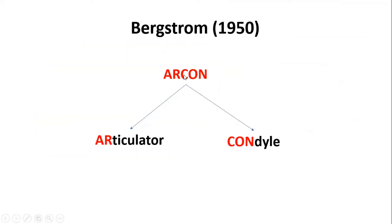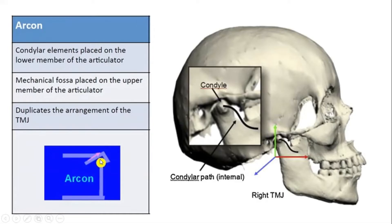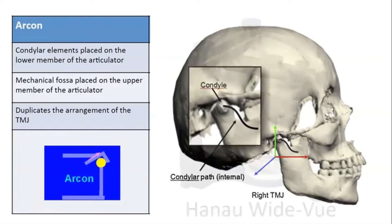The term 'arcon' was given by Bergstrom in 1915. It is made up of two terms: 'articulator' and 'condyle.' In an arcon articulator, the condylar element is part of the lower (mandibular) member of the articulator, and the condylar guidance is attached to the upper member. This is similar to our natural anatomy, where the condylar fossa is part of the cranium attached to the maxilla, and the condyle is part of the mandible.